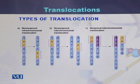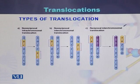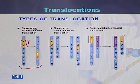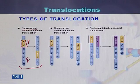Types of translocation based on the centromere include non-reciprocal and reciprocal translocation. In the case of non-reciprocal intra-chromosomal translocation, there is a change of fragments within a single chromosome. Originally, a fragment was present on the p-arm; as a result of translocation, it has joined on the q-arm.